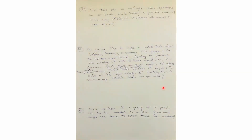Questions 8, 9, and 10. Question 8: if there are 10 multiple choice questions each having 3 possible answers, how many different sequences of answers are there? Question 9: you want to make a salad with one variety each of lettuce, tomato, cucumber, and pepper. There are 8 varieties of lettuce, 4 of tomatoes, 3 of cucumbers, and 3 of peppers. How many different salads can you make? Question 10: four members of a group of 10 people are to be selected to a team. How many ways are there?